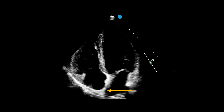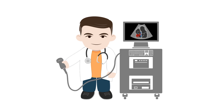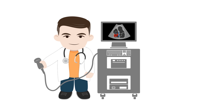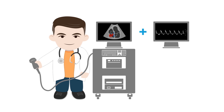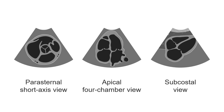You may have guessed this is actually the fossa ovalis, and it is completely normal. But what happens when you do suspect a septal defect? In this case, you must use a color box to assess the direction of the blood flow. In addition, if your cursor is perpendicular to the potential defect, you should also use pulse wave Doppler to measure the velocity of blood flow and confirm your suspicions.